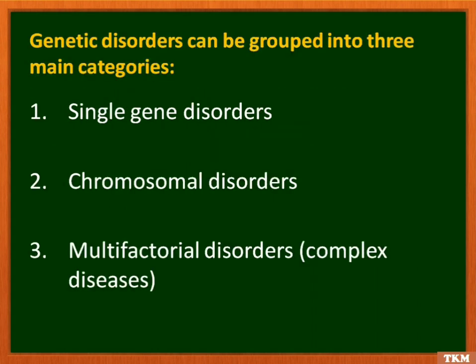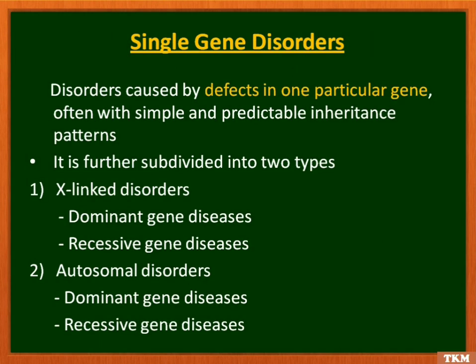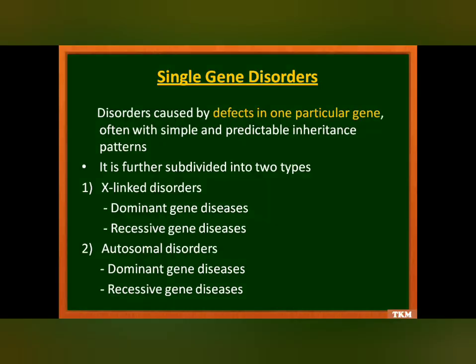Genetic disorders are basically grouped into three main categories: single gene disorder, chromosomal disorder, and multifactorial disorder. A single gene disorder is caused by a defect in one particular gene, often with a simple and predictable inheritance pattern.